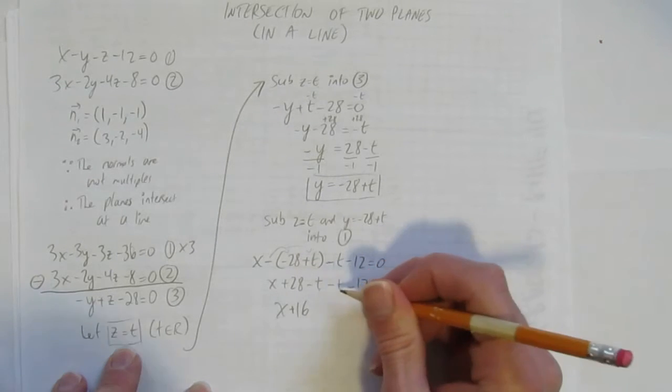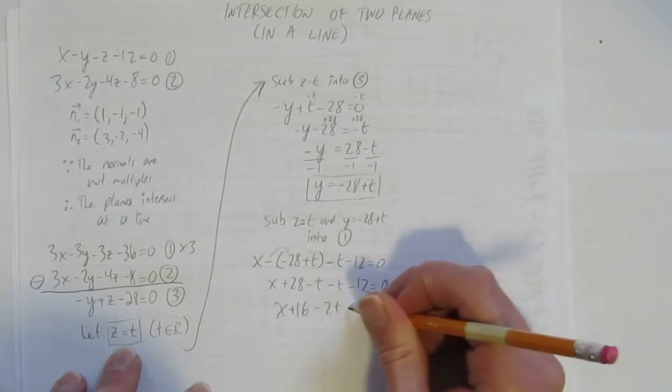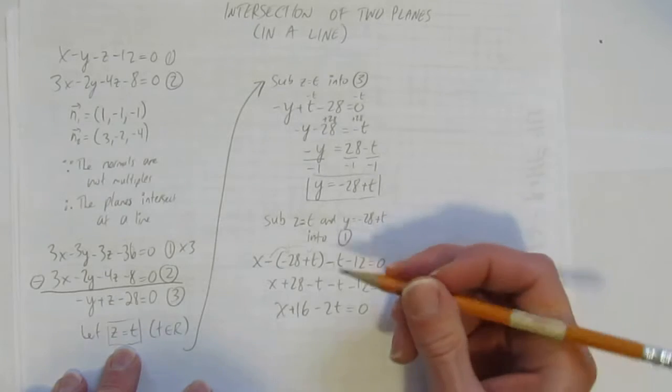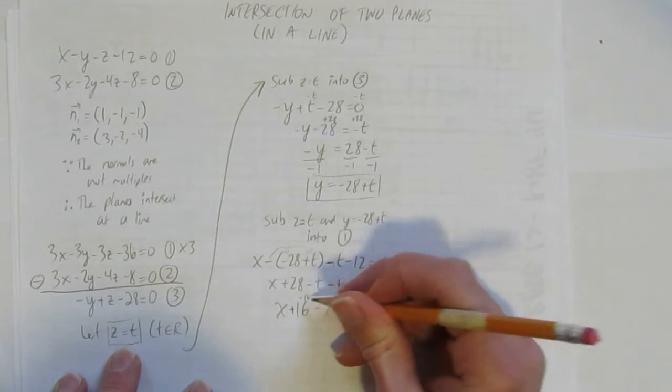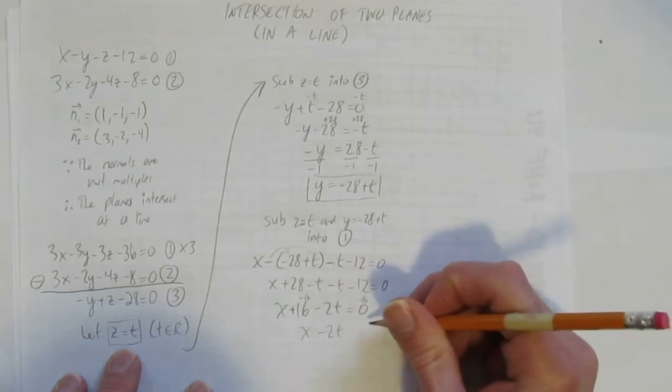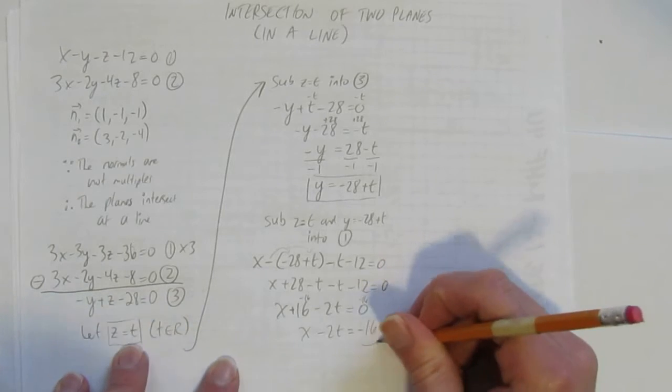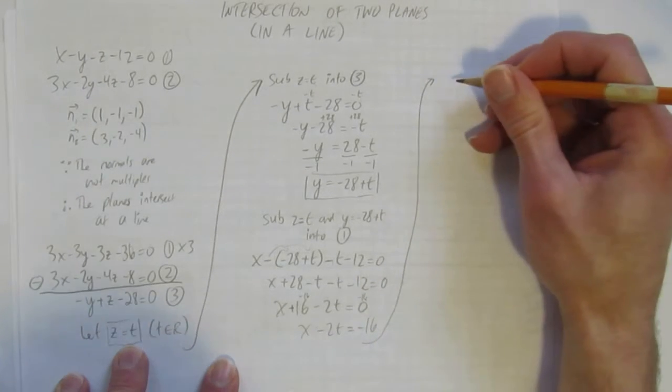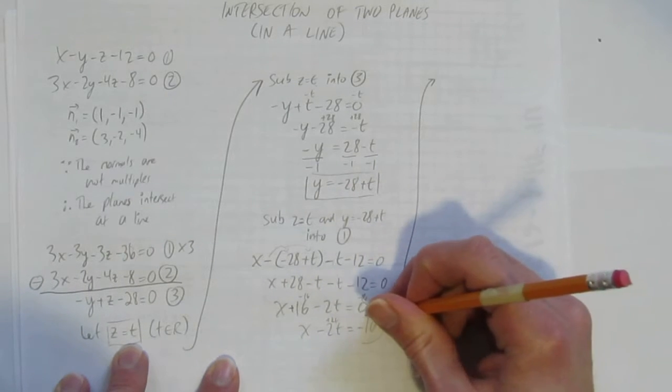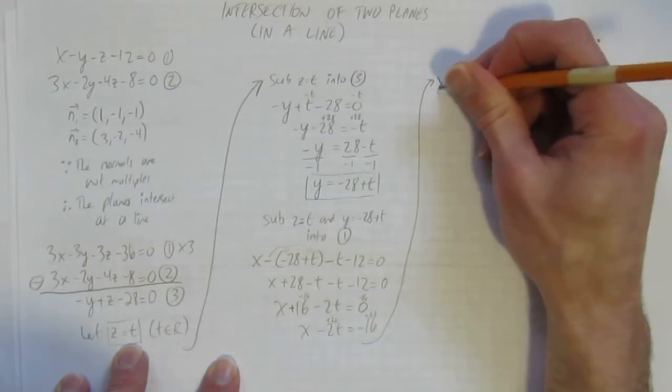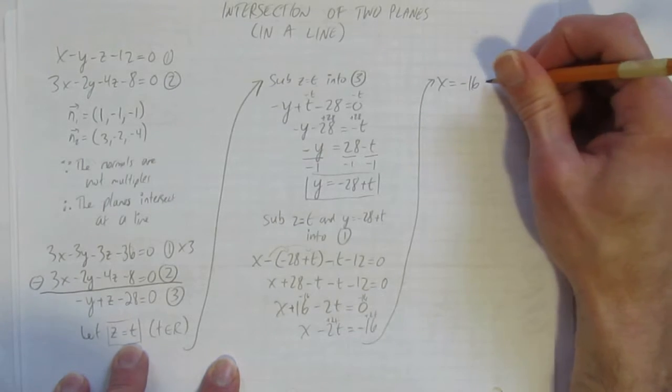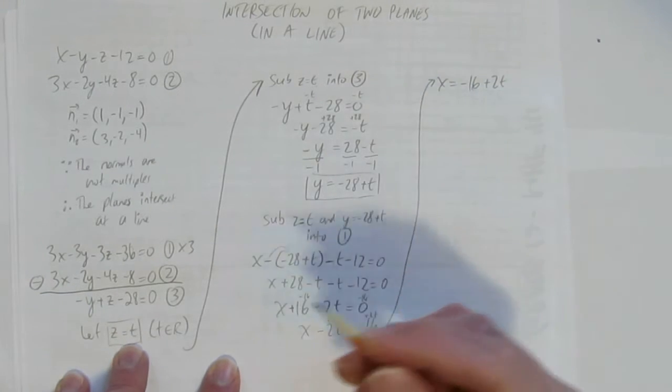So now I want to move it over. Last time I moved the t's over first. This time I can move the numbers over first. Doesn't matter. Take away 16 both sides. And I get x minus 2t equals negative 16. I'm going to continue up here. So now I can just see what I'm doing here. I'm going to get x by itself. Add 2t both sides. And I solved for the x parametric equation. I get x equals. I'm going to write the number first. Negative 16 plus 2t. And I've done it. I have a parametric equation. I'll write them all out.